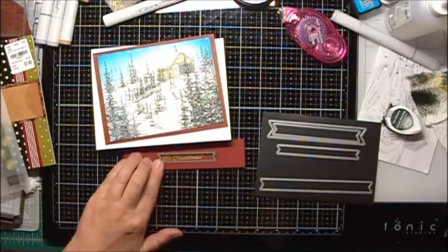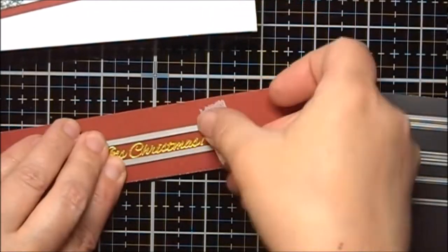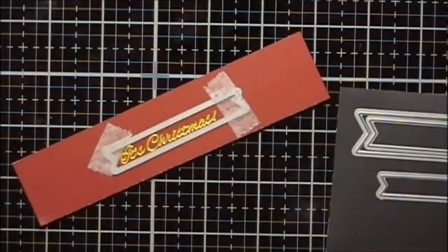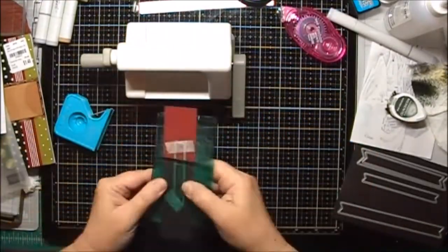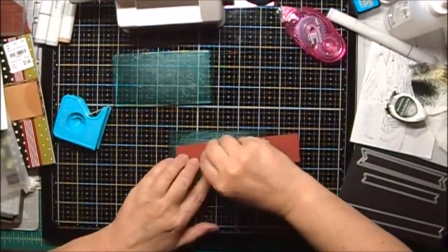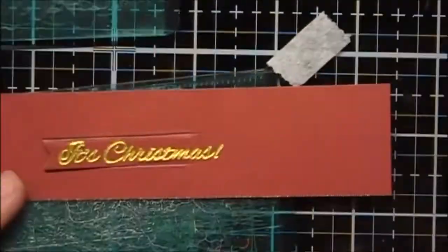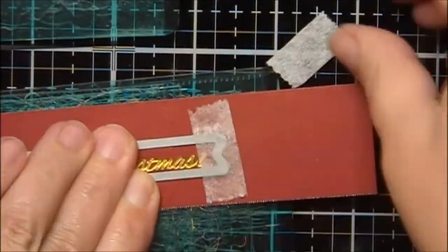And I'll use a banner die to cut out my sentiment. And the die is a little bit too long. So I'm just going to do a partial cut to cut the one side. And then I'll do another partial cut. And cut the other side to get the length I want.